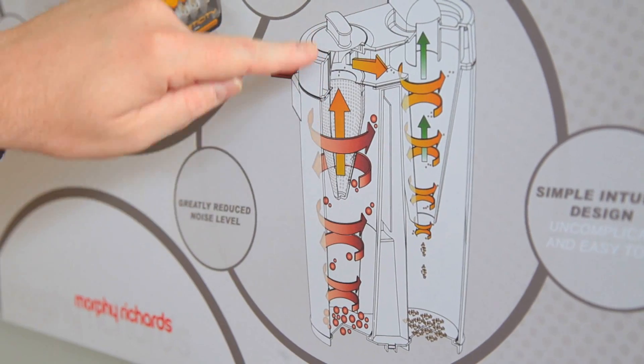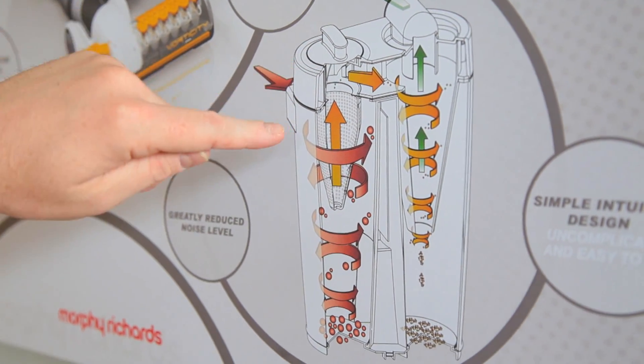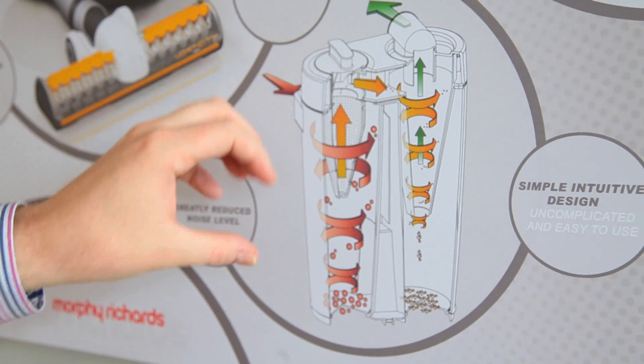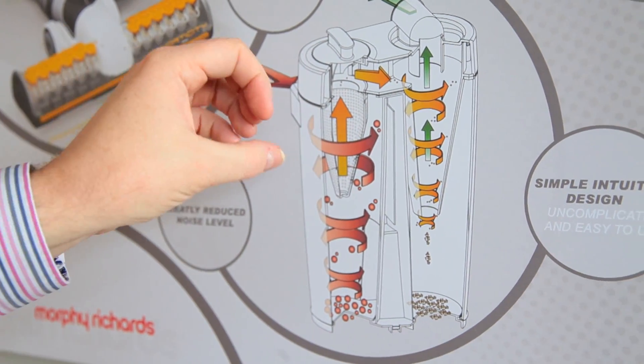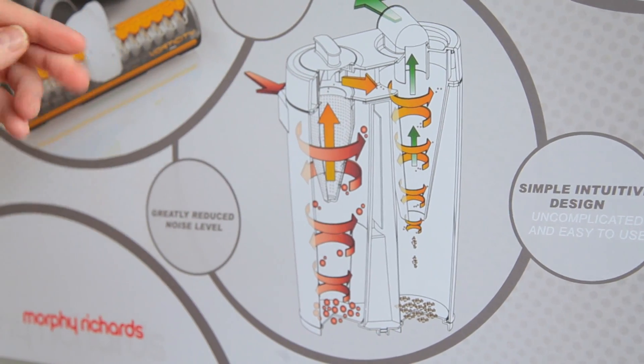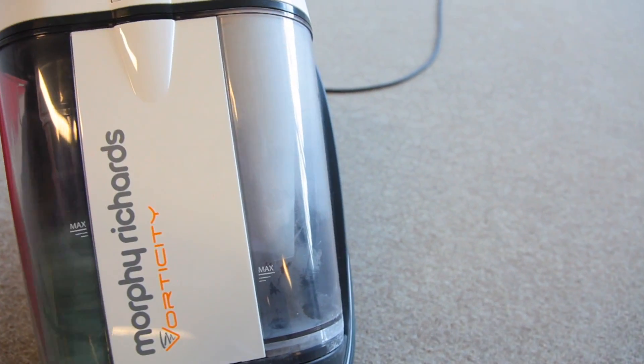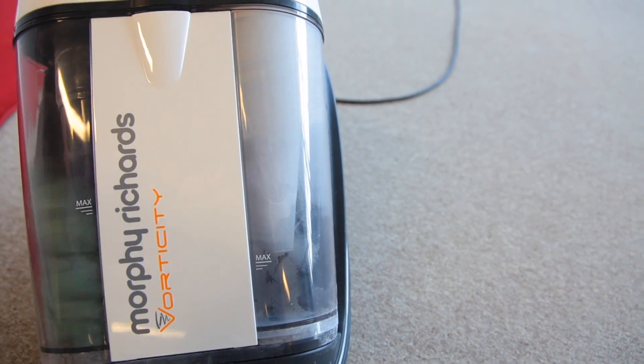In the middle of the product here, there's what's known as the mesh filter. So the mesh filter's purpose is to stop any large particles from entering through to the next chamber. So only fine particles and air can actually penetrate through the mesh filter across to the next stage of the cyclone system.